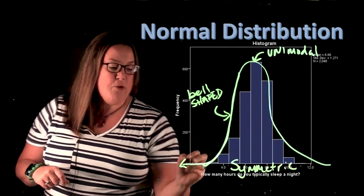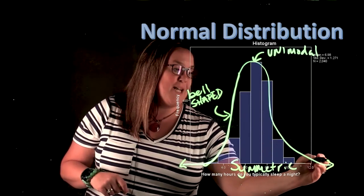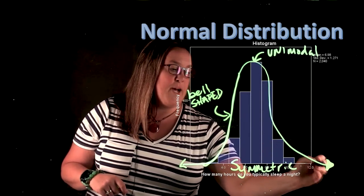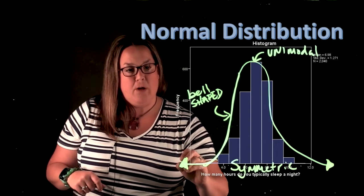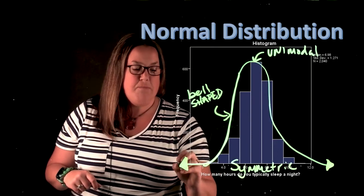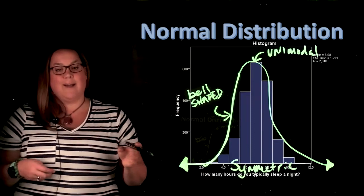And then the other thing about the normal distribution is that it continues on and on. Now, this particular graph, when I talk about the hours of typical sleep per night, that's not going to continue on and on.